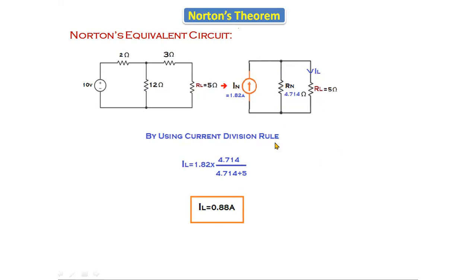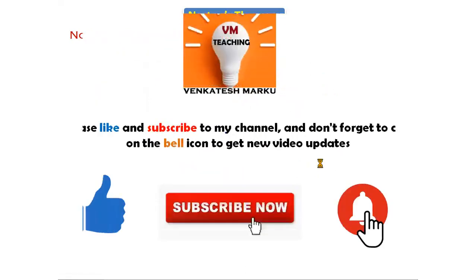Using the current division rule: the required current I_L equals total current into the opposite resistance (4.714Ω) divided by total resistance (4.714 + 5Ω). Calculating this gives load current I_L = 0.88 amperes. This is the procedure to find Norton's equivalent circuit — first calculate I_N, then R_N, place those values in the equivalent circuit, and find the load current. In the next class we will discuss the maximum power transfer theorem.